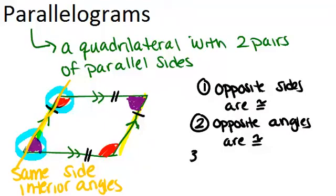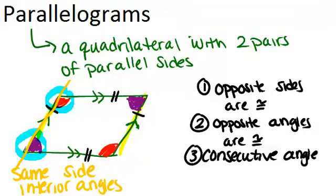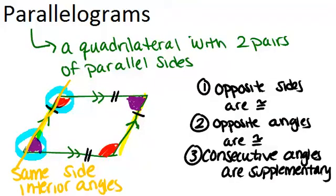So what this means is that consecutive angles, which is really just the angles that are not opposite to each other, so like the purple and the red, consecutive angles are always supplementary. And that's due, again, to the fact that they are actually same side interior angles.